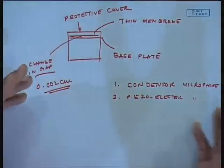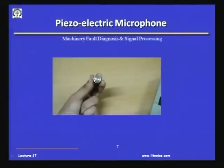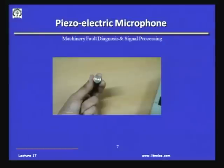Similar to accelerometers, when the diaphragm diameter reduces, the natural frequency is high. This microphone shown is about half an inch and has a typical frequency range up to about 20 kilohertz. If I make it smaller, I can have microphones up to 70 or 200 kilohertz. There are a lot of mechanical phenomena occurring at such high frequencies - particularly during abrasive jet machining or water jet machining - which produce ultrasonic waves that could be captured by such microphones.